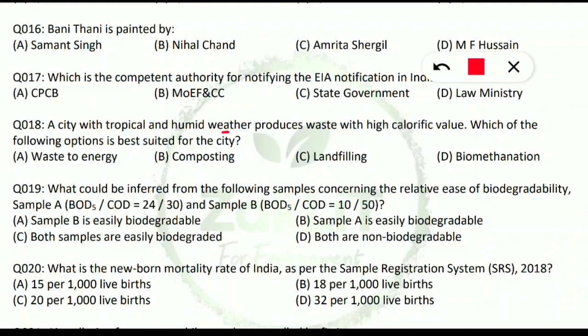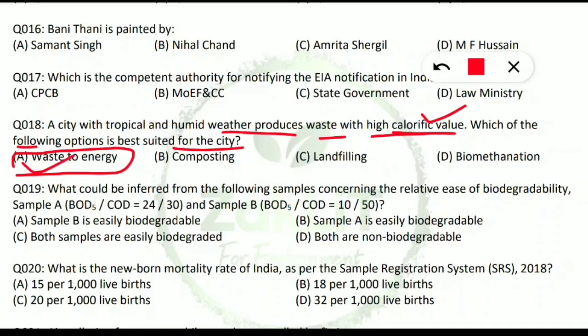Question 18: a city with tropical and humid weather produces waste with high calorific value. Which option is best suited for the city? Since the waste has high calorific value — meaning high energy content — it can be used to prepare waste-to-energy. Option A is correct: the city should go for waste-to-energy conversion since the high calorific value of the waste makes it very useful for generating energy.